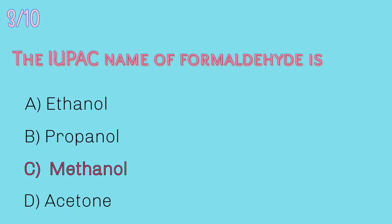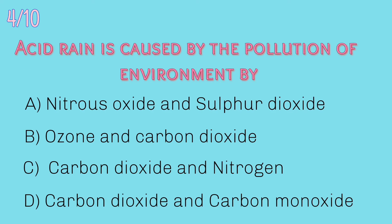Formaldehyde is a naturally occurring organic compound with the formula CH2O. Fourth question: acid rain is caused by the pollution of environment by — nitrous oxide and sulphur dioxide, ozone and carbon dioxide, carbon dioxide and nitrogen, or carbon dioxide and carbon monoxide?